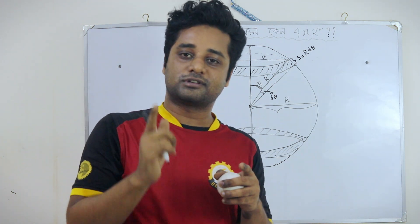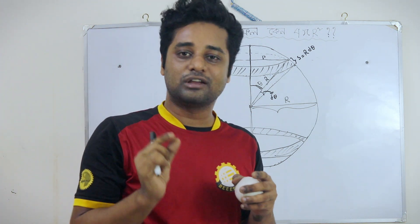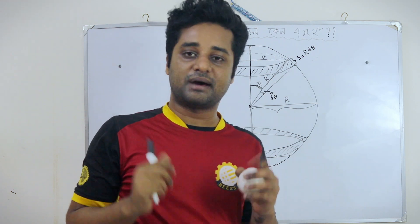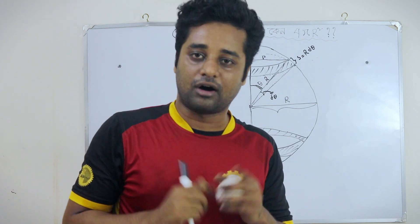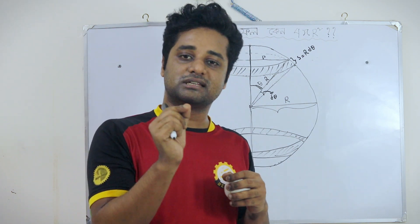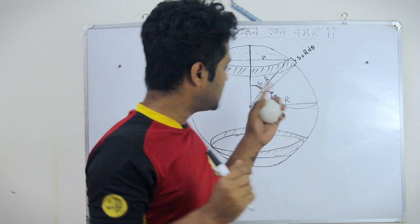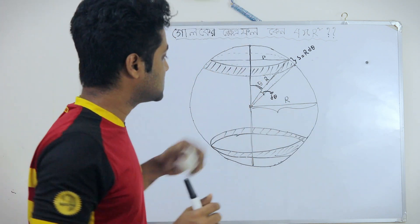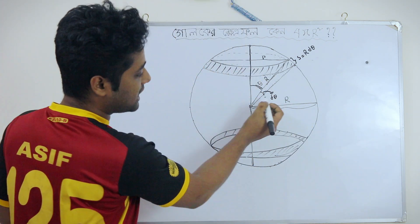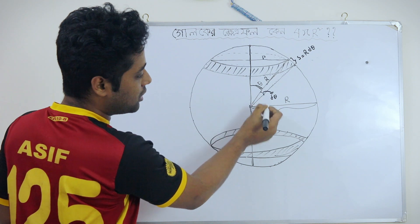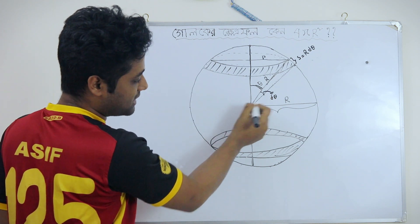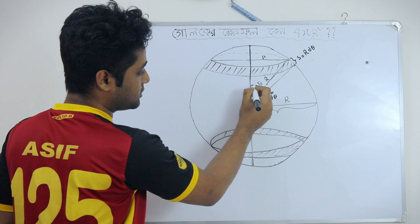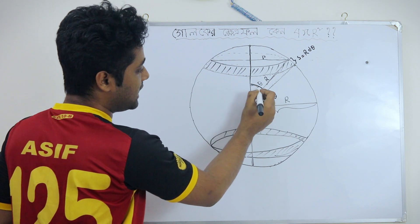What do we say? We can see that R is the same as R, which is the same as R. So we can see that R is the same as R. We can see that it is the same as R, so that it is also R.